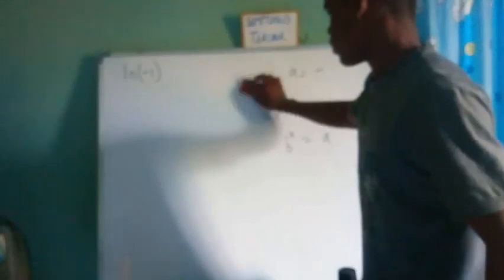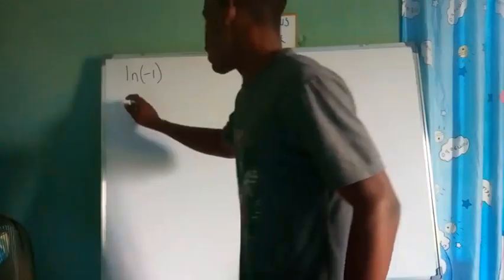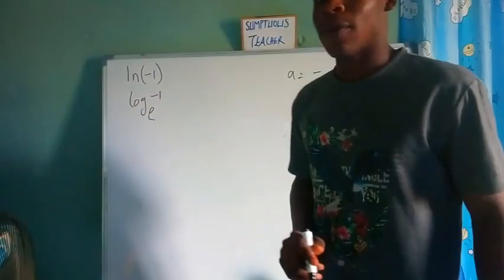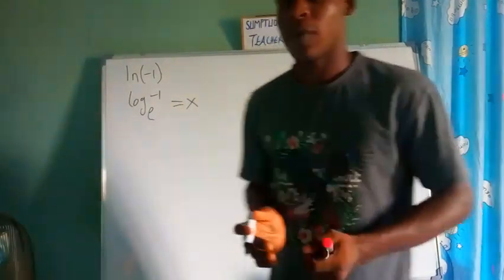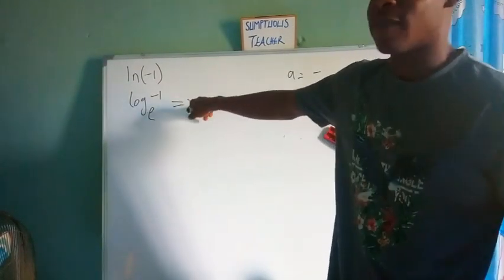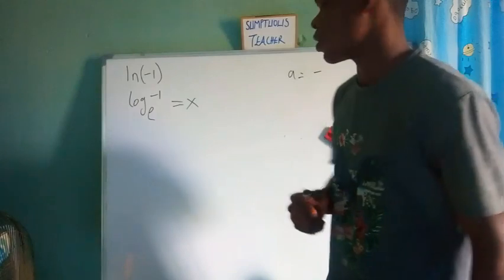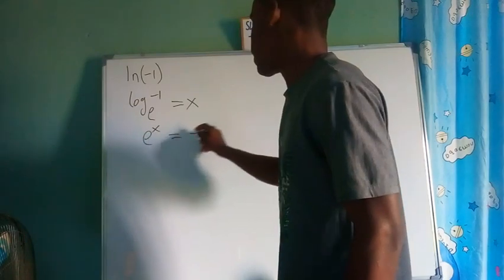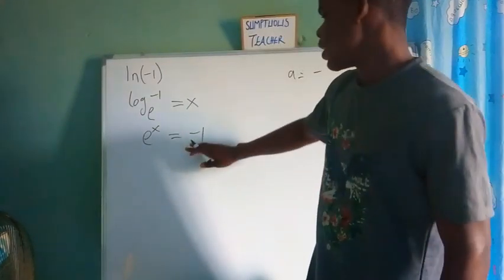The natural logarithm of negative one can be rewritten as log to base e of negative one. Let's say that this equals x. We believe it doesn't have a value on the set of real numbers, but let's proceed as a contradiction — that it actually has a value x, without yet assigning which set x belongs to. This simply means that e to the x is equal to negative one.